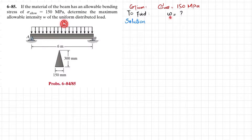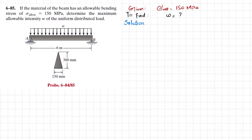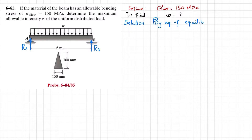We have to find the intensity w of the uniformly distributed load. First step: removing the support at point A gives a reaction force R_A, and removing the support at B gives R_B. Since this beam is symmetrical about the midpoint, using equilibrium conditions, R_A equals R_B. Converting the UDL into a point load gives 6w, so R_A equals R_B equals 3w.